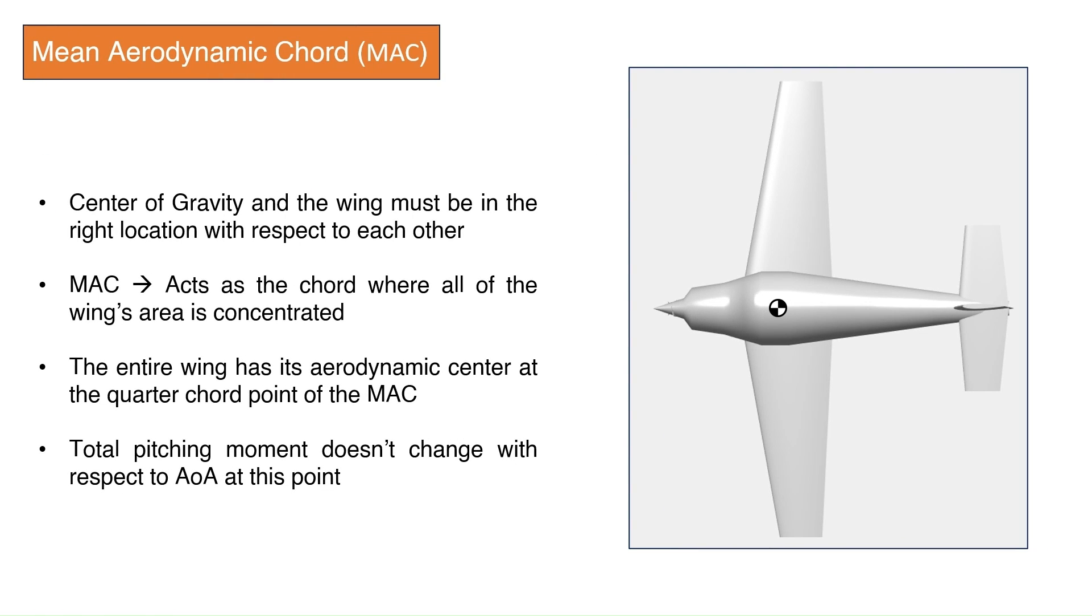Mean aerodynamic chord. Now, we can decide on where to place the wing on the fuselage so that the airplane is stable. We need to design the airplane so that the center of gravity and the wing are in the right location with respect to each other. To do this, we first need to find out the mean aerodynamic chord or MAC of the wing.